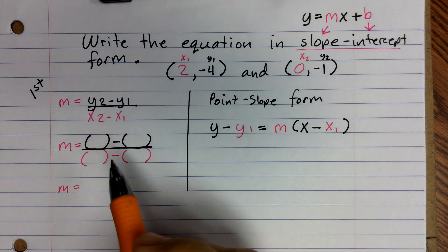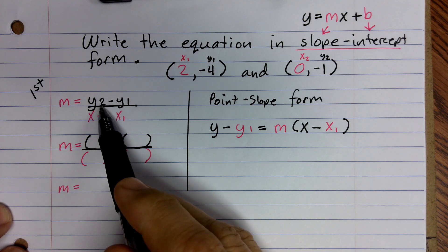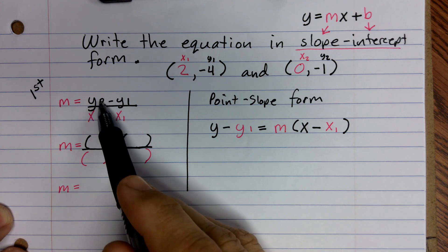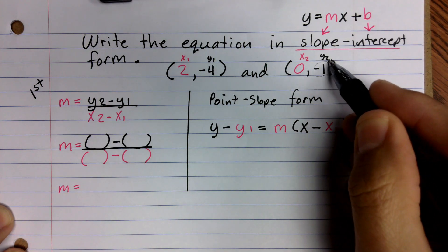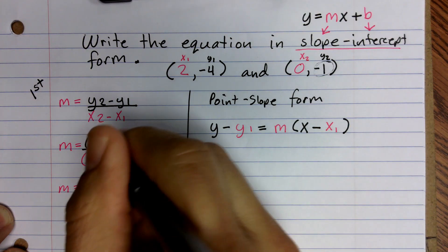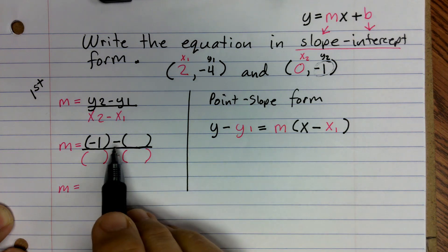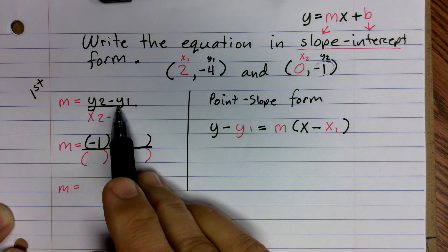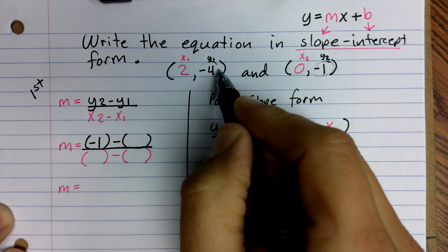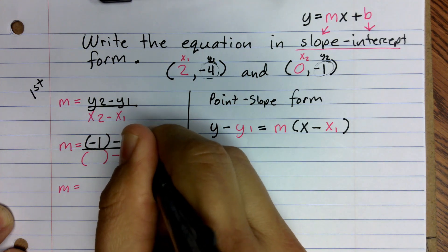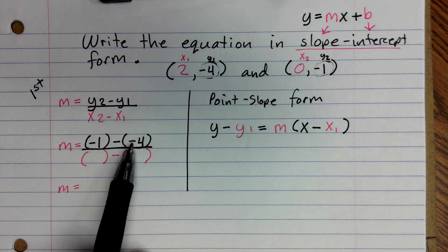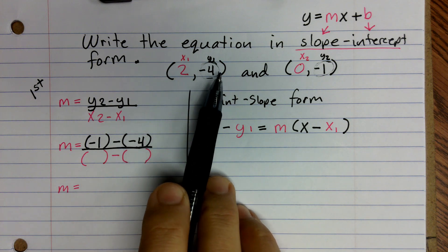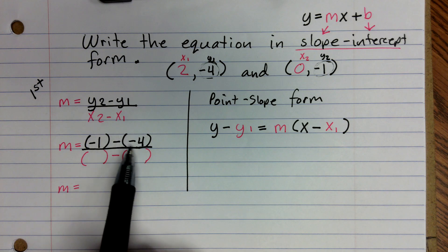To find my slope, I need to get my y2 value and put it in the first set of parentheses — any time we replace a variable with a number, we put it in parentheses. My y2 value is negative 1. Then I subtract my y1 value, which is negative 4. It's important to use parentheses because notice we have this negative sign from that 4 — if there's a negative sign in front of your number, you have to put it in the parentheses with that value, because something will happen when we distribute.